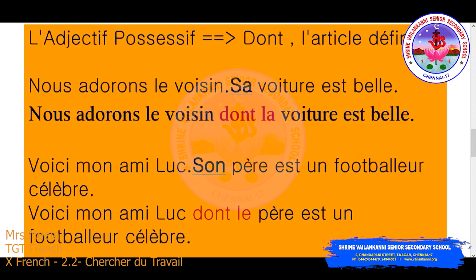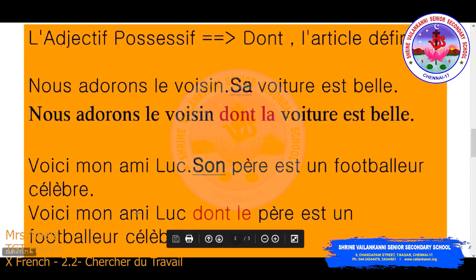With possessive adjectives, 'dont' will be replaced along with the definite article. We will see that with an example. 'Nous adorons le voisin, ça veut dire que la voiture est belle.' To connect these two sentences, we replace with 'dont' and the suitable definite article: 'nous adorons le voisin dont la voiture est belle.' Another example: 'voici mon ami Luc, son père est un footballer célèbre.' Instead of 'son', replace with 'dont' and the definite article: 'voici mon ami Luc dont le père est un footballer célèbre.'